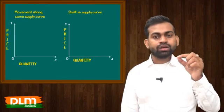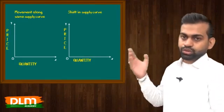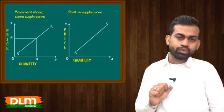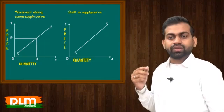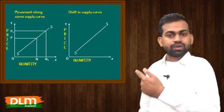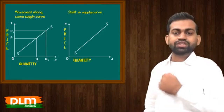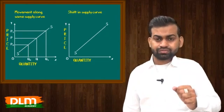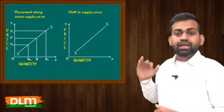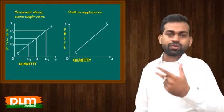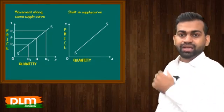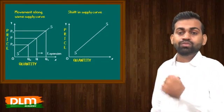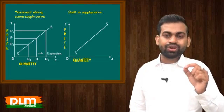Ab hum baat karenge shift in supply curve and movement along same supply curve ka. Pehle supply curve pe price P rakha to quantity Q ho gaya. Jab price bada ke P1 hua to quantity increase ho ke Q1 ho gaya. Agar price kam ho ke P0 hota to quantity reduce ho ke Q0 hota. Jab goods ka price change ho raha hai to hum usi supply curve pe upward ya downward move ho rahe hain. Jab price bada, upward move — that is expansion. Jab price ghata, downward move, quantity kam ho gayi — contraction.